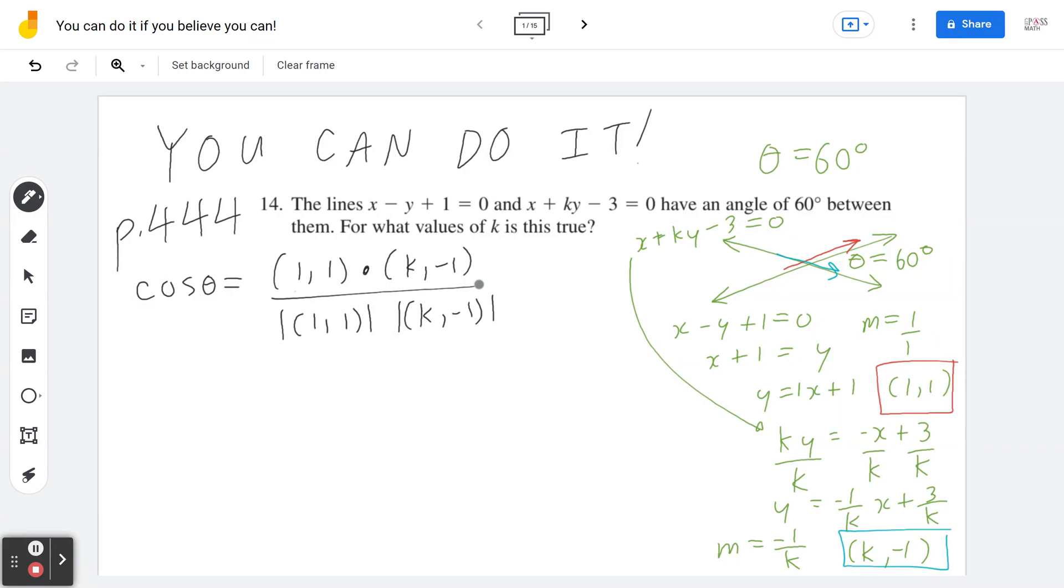On the left-hand side, angle theta is given to be 60 degrees. Cosine of 60 degrees is exactly 1 over 2. On the right-hand side, the dot product is 1 times k plus 1 times negative 1, divided by the square root of 1 squared plus 1 squared, times the square root of k squared plus negative 1 squared.